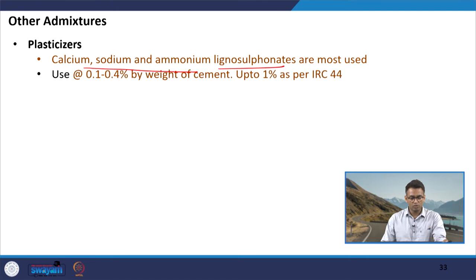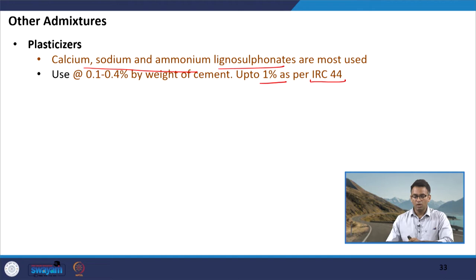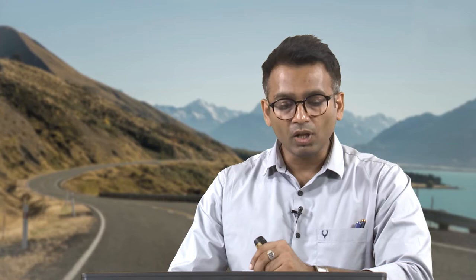Regarding dosage, there are ways to determine the optimum dose, but typically it ranges from 0.1 to 0.4 percent by weight of cement. The optimum dose also depends on the type and angularity of aggregates, and the type of cement used. As per IRC 44 — the guideline for pavement quality concrete — up to 1 percent can be used, achieving a reduction of 5 to 15 percent in mixing water content.